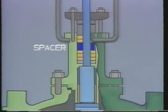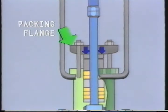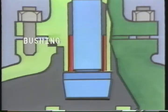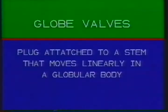A spacer is included in the stuffing box when the needs of the system don't require a stuffing box to be completely filled with packing. The packing flange puts pressure on the packing follower, which compresses the packing material inside the stuffing box. Beneath the packing assembly, the bushing helps guide the stem. We've seen an example of a common type of valve, the globe valve. Some other designs of globe valves are described in your text. The feature they have in common is a plug attached to a stem that moves linearly in a globular body.